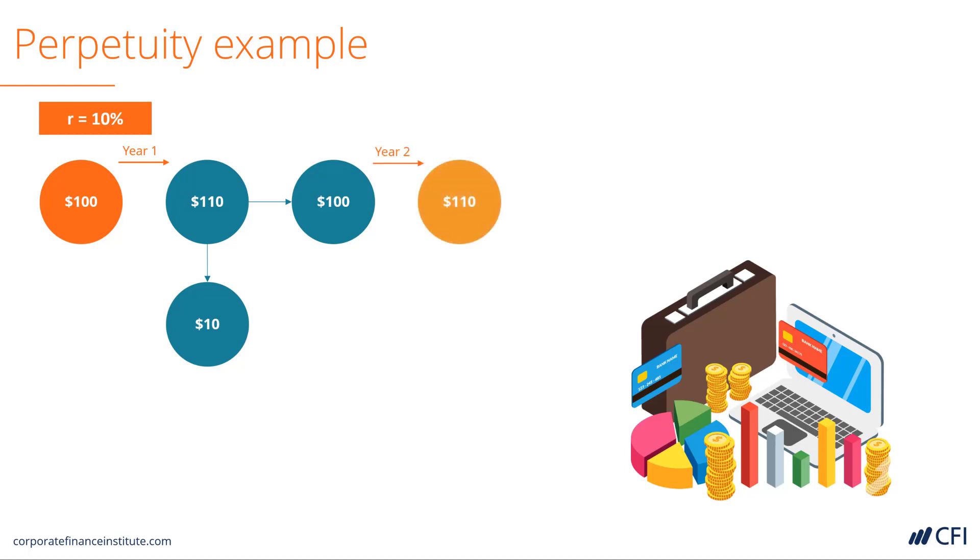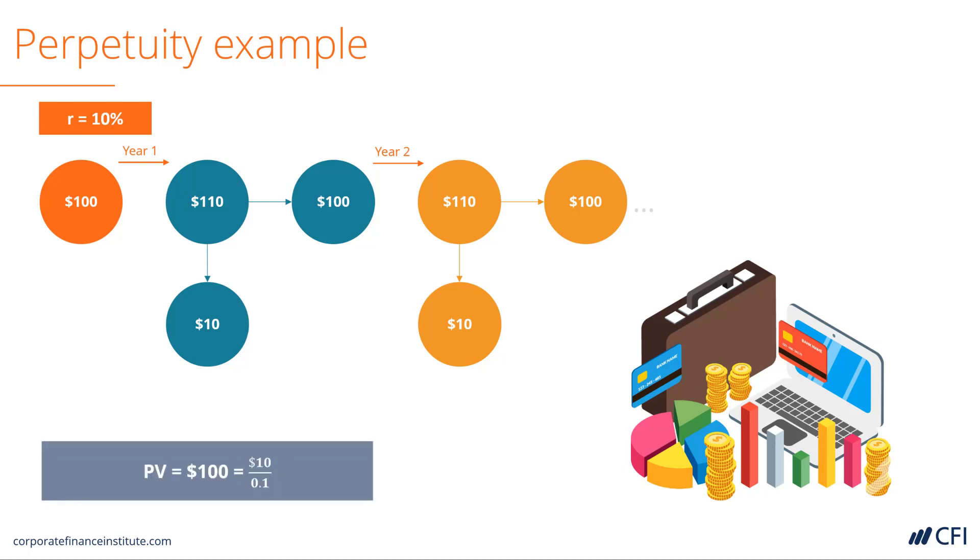In other words, I've created a stream of $10 every year forever, starting with $100. Therefore, the present value of a perpetuity, if interest rates were 10%, paying $10 every year is $100—which we can also write as $10 divided by 10%.